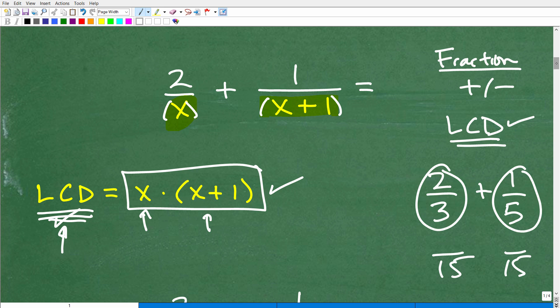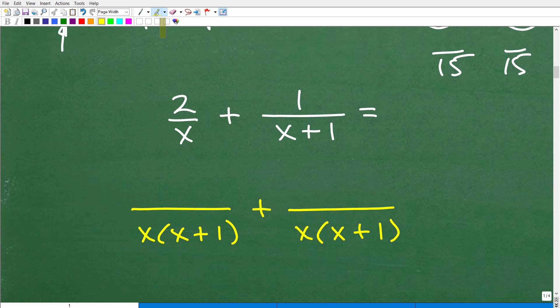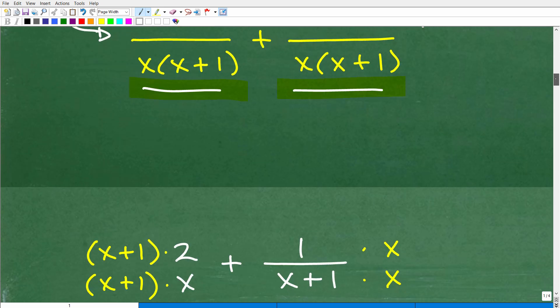Anyways, so we have the LCD x times (x + 1). Let's go ahead and now rewrite these fractions such that these denominators - basically, we're taking this fraction and we're going to write it in a way such that it has the LCD as its denominator. And we're going to take this rational expression or fraction - talk loosely here. If I say the word fraction, what I really mean is rational expression. It's just a little bit easier to say the word fraction. But anyways, what we need to do is to rewrite these individual rational expressions such that they have this LCD as the denominator. So how do we do that? Well, let's go ahead and talk about that right now.